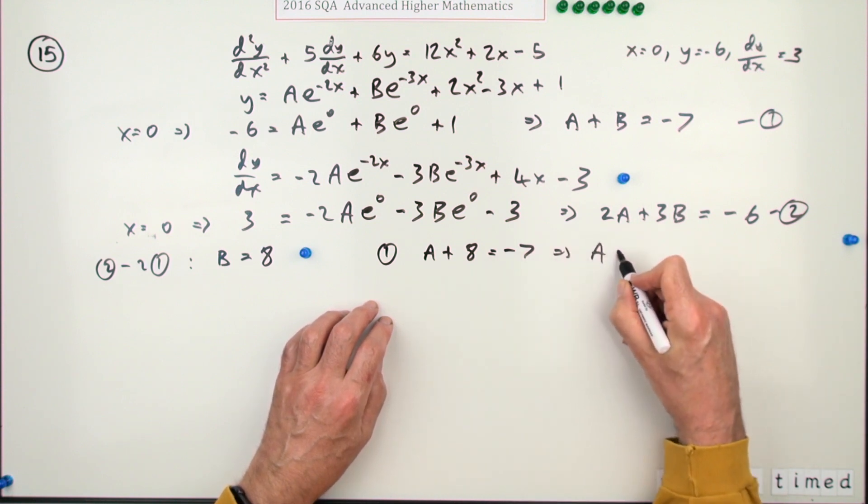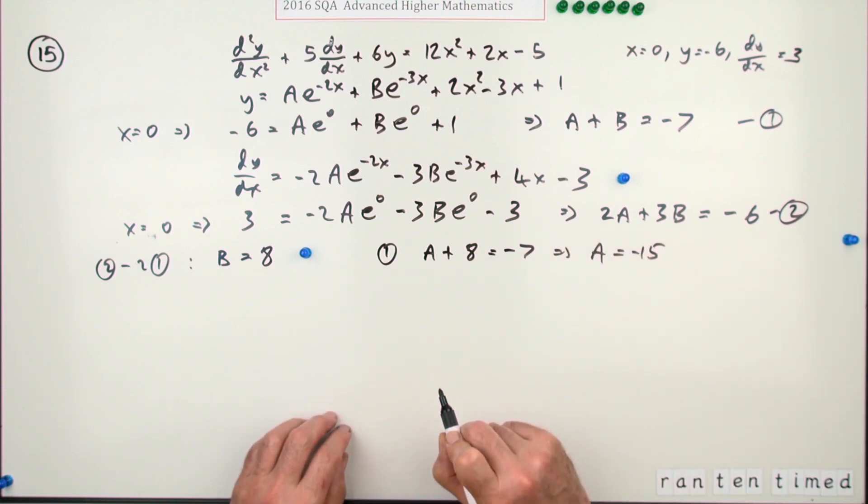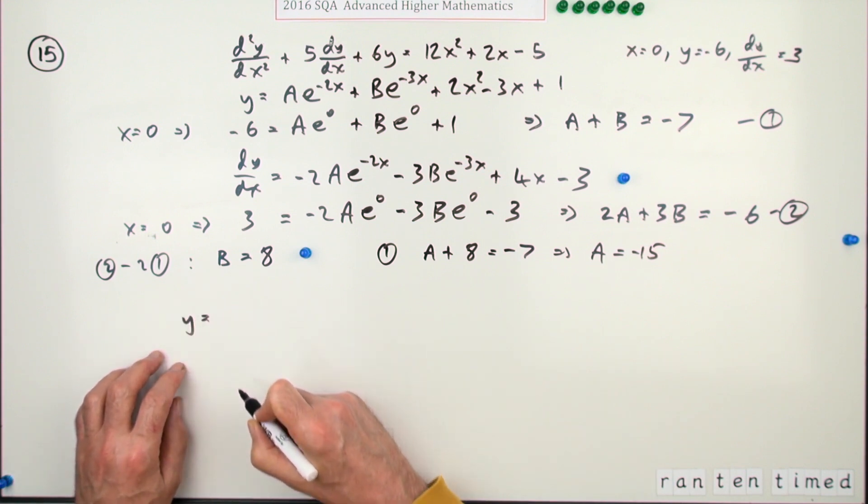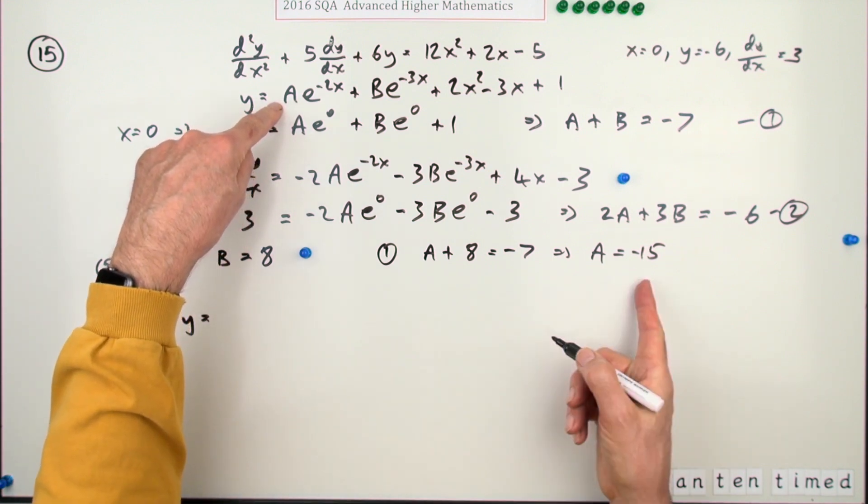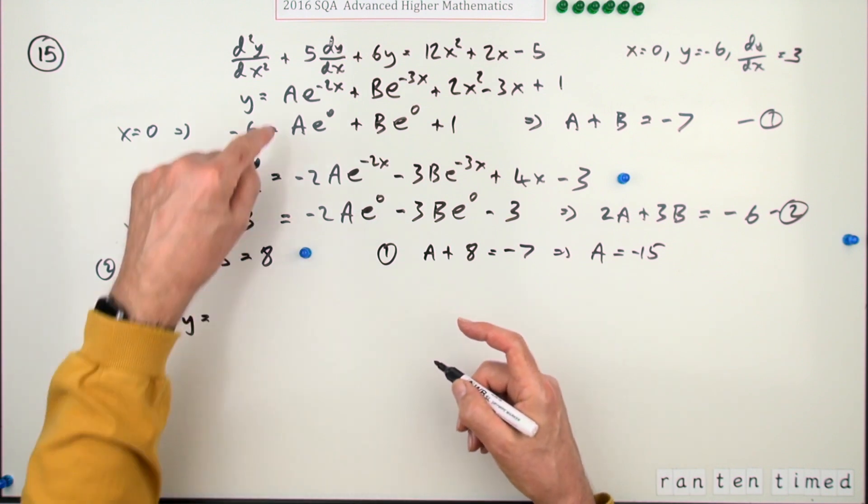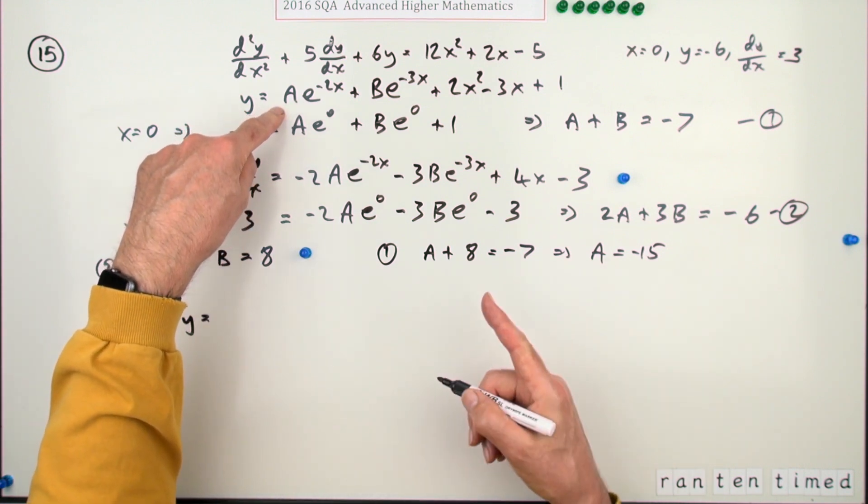And then popping it back into either, if I go for number one, A plus 8 equals negative 7, which means taking that across, A is negative 15.